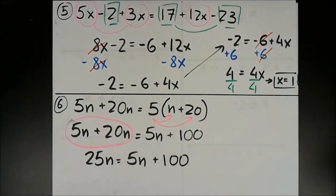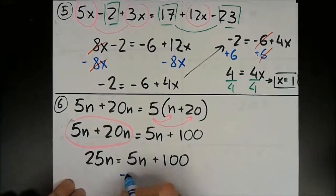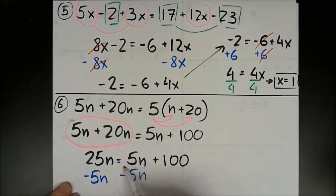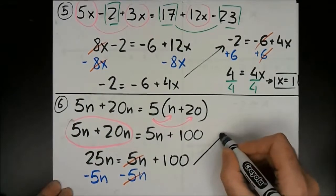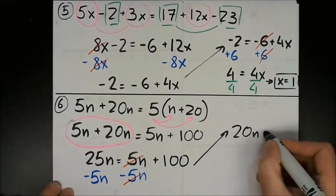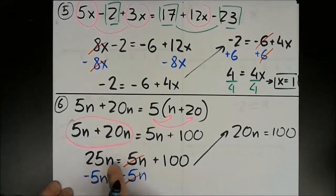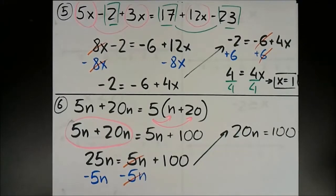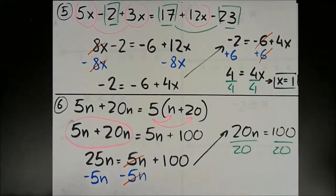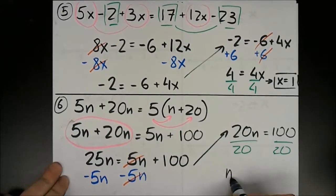Now I have n on two sides of the equation — n here and there. I want n only in one place. The 5n is the smaller one, so it goes. These cancel out. 25n minus 5n is just 20n, and all I have is 100. So 20n equals 100. I just divide both sides by 20, and n equals 5.